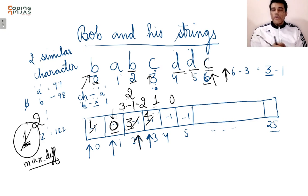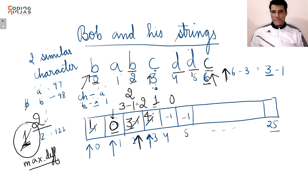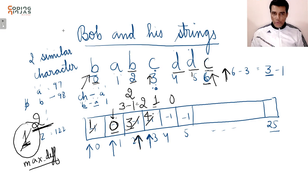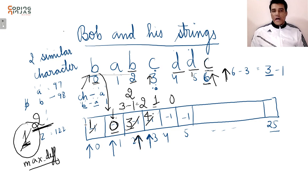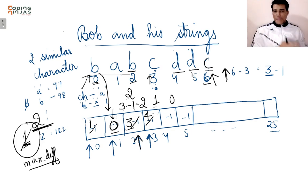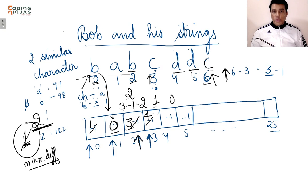When I traverse further and reach beyond the string, I have exhausted the traversal. The maximum distance I've found is my answer. I hope you've understood how we traversed the string, located each character to an array index, stored the first occurrence, and updated the max difference along the way. I hope you'll be able to convert this logic into code. That was all for this question, thank you.